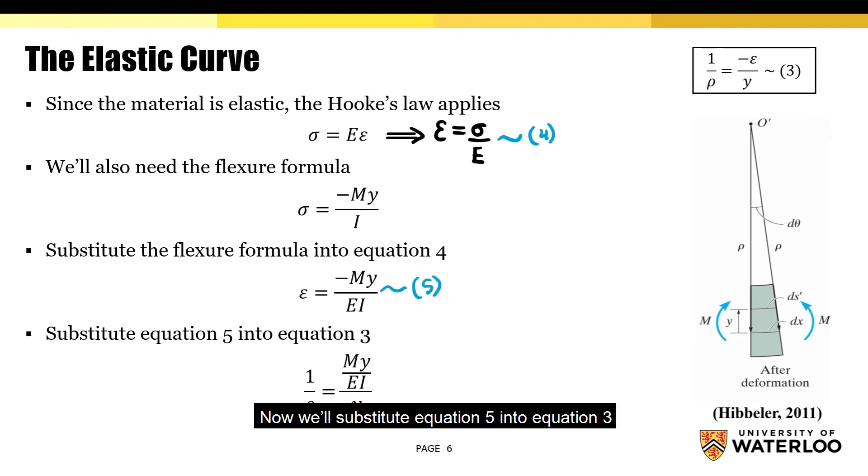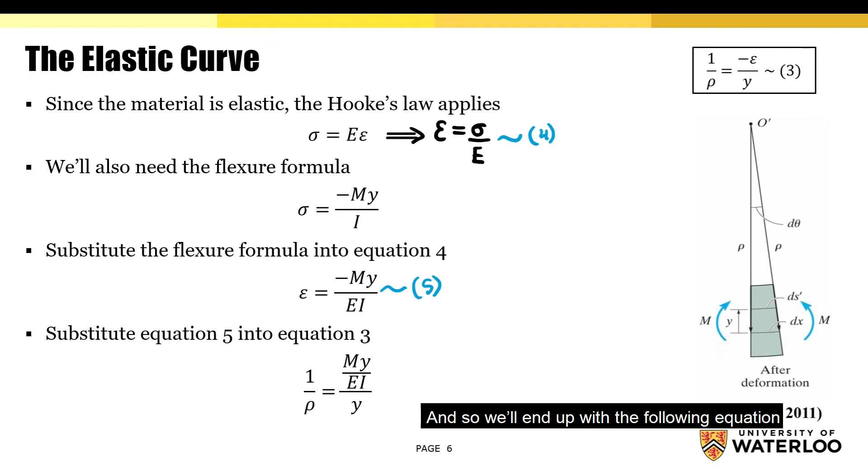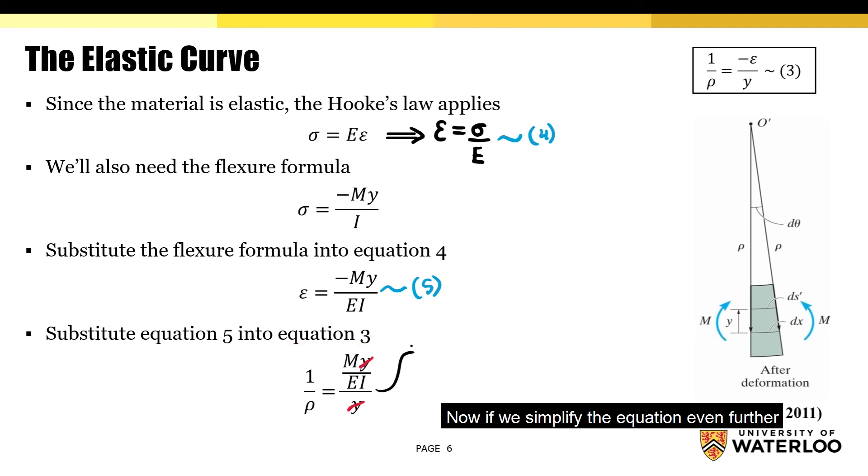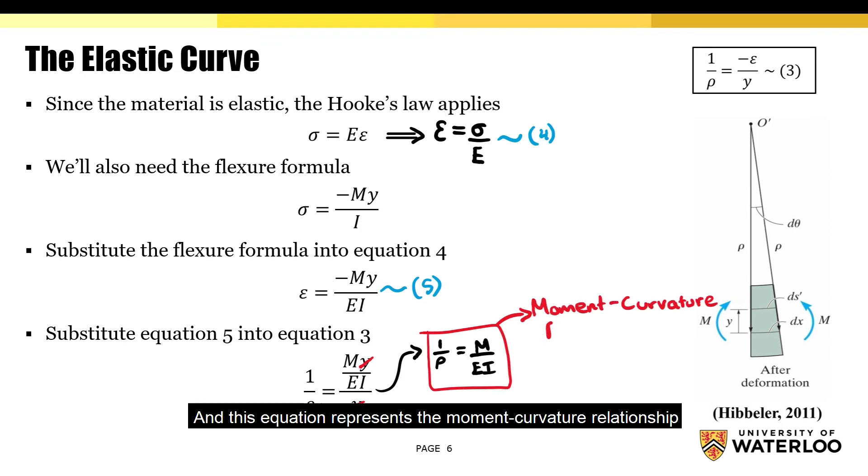Now, we'll substitute equation 5 into equation 3, and so we'll end up with the following equation. Notice how the negative signs cancel each other out. Now, if we simplify the equation even further, we'll end up with this equation here. And this equation represents the moment-curvature relationship.